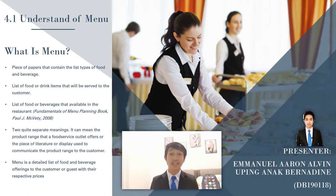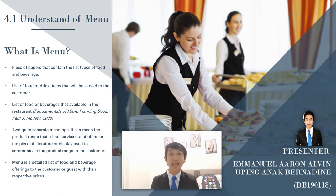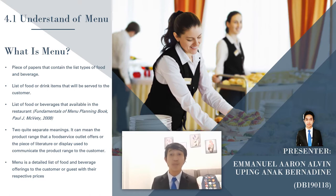4.1 Understanding of Menu. What is a Menu? Menu is the piece of paper that contains the list of types of food and beverage items available for purchase, or a list of food or drink items that will be served to the customer. According to Paul J. McVaddy in 2008, in the Fundamentals of Menu Planning book, menu is the focal point of any food service sector. It is the list of food or beverages that are available in the restaurant.